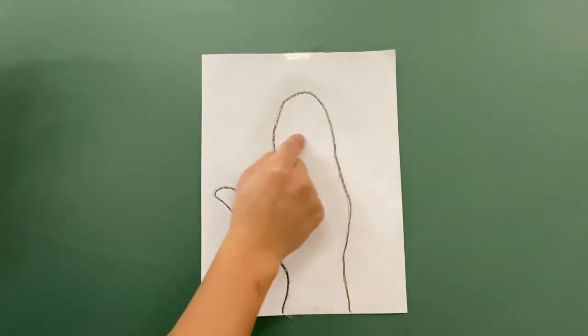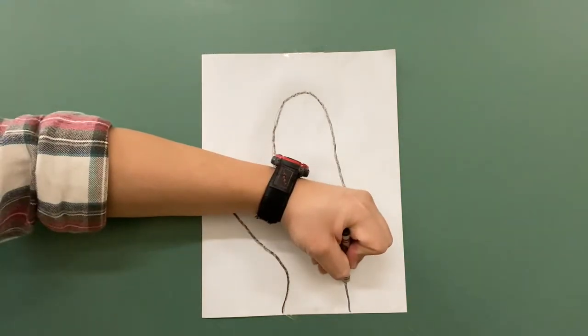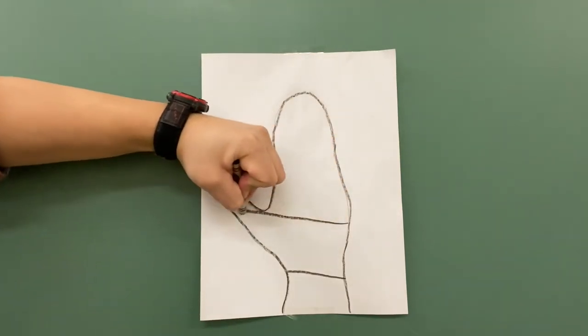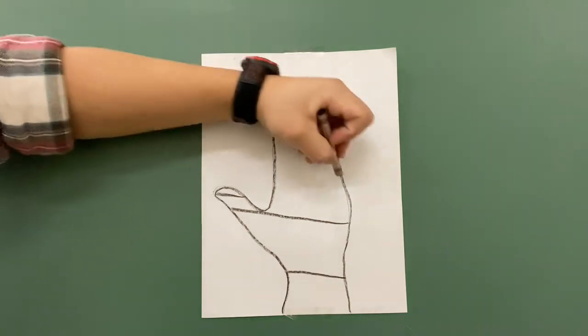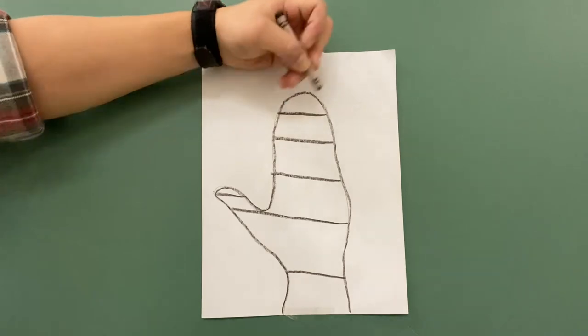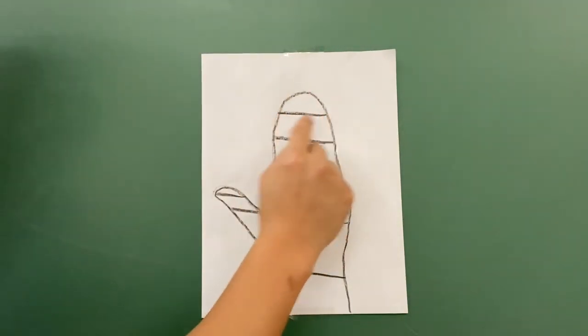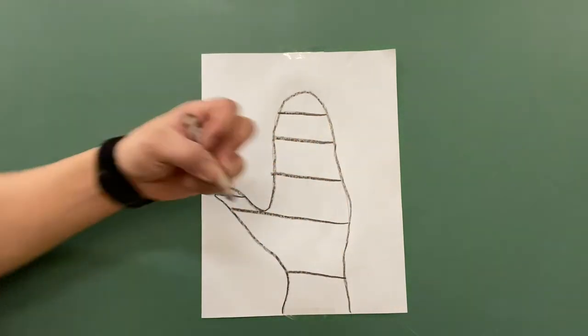So now what we're going to do is draw horizontal lines so that our winter mitten is in sections. So we're going to have one horizontal line going that way. Another horizontal line going this way. We can draw another horizontal line right here in the thumb. Another one here. Another one here. And one last one right up here. These are called horizontal lines.